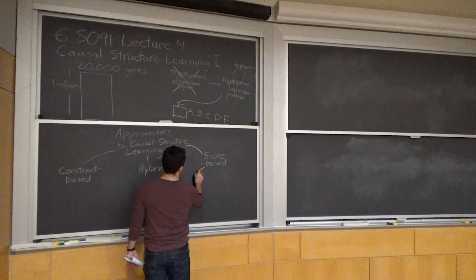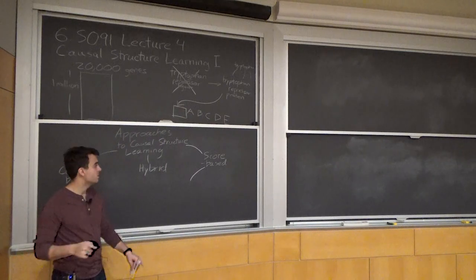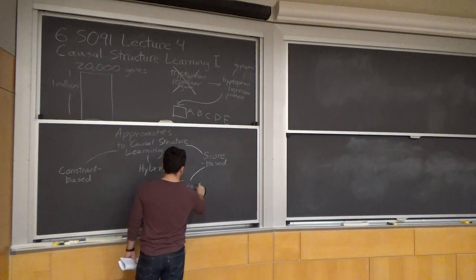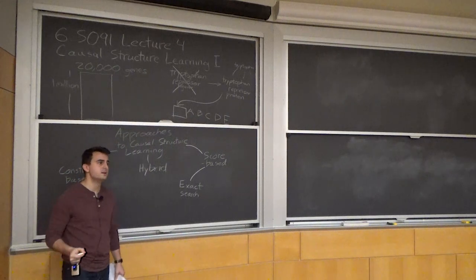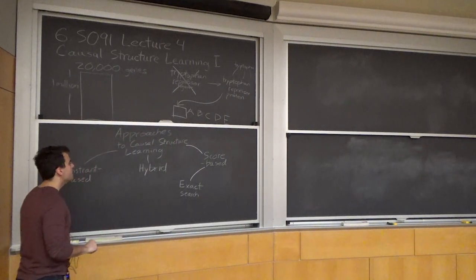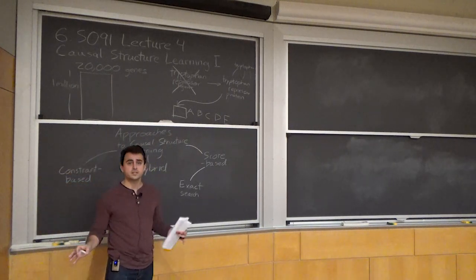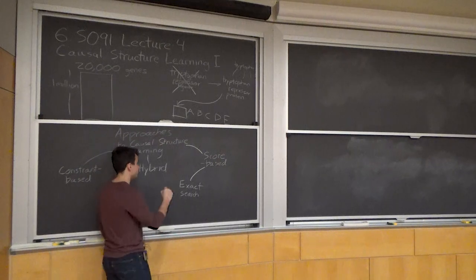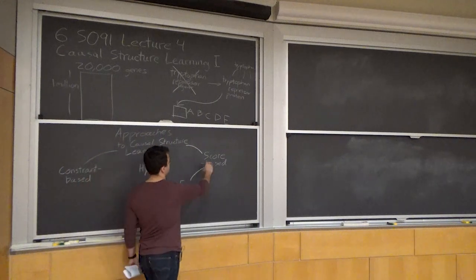The next level of division is between the ways score-based methods approach optimization. Exact methods perform some sort of exact search over the space, often using techniques from combinatorial optimization and integer linear programming. They don't have to exhaustively enumerate everything — they use branch-and-bound techniques — but they ensure they return exactly the graph that maximizes the score.